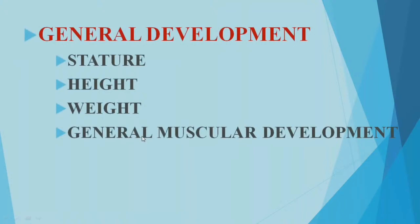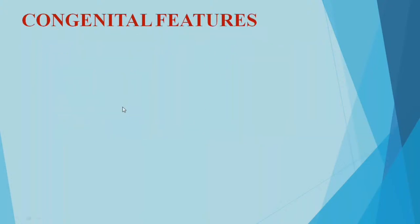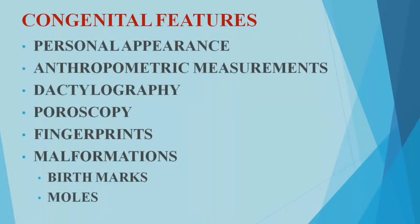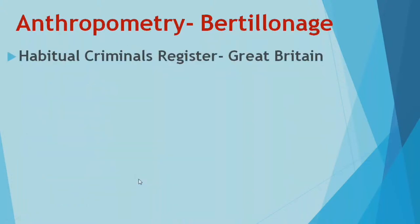General development parameters such as height, stretch height, weight, and general muscular development all come under anthropometric measurement. Congenital features contribute to personal appearance. Additional features include dactylography, poroscopy, and fingerprinting.